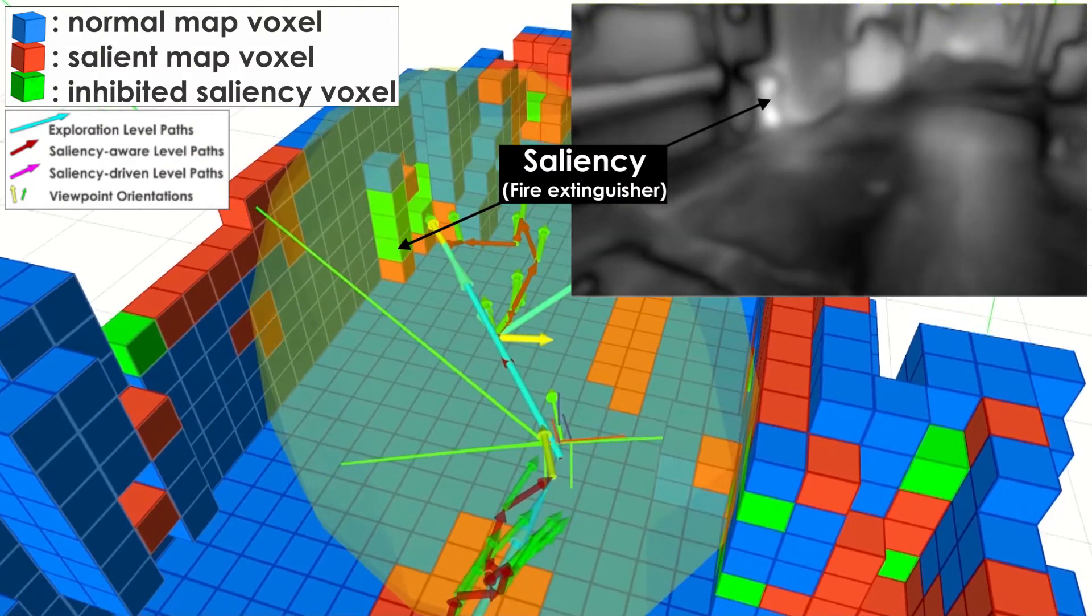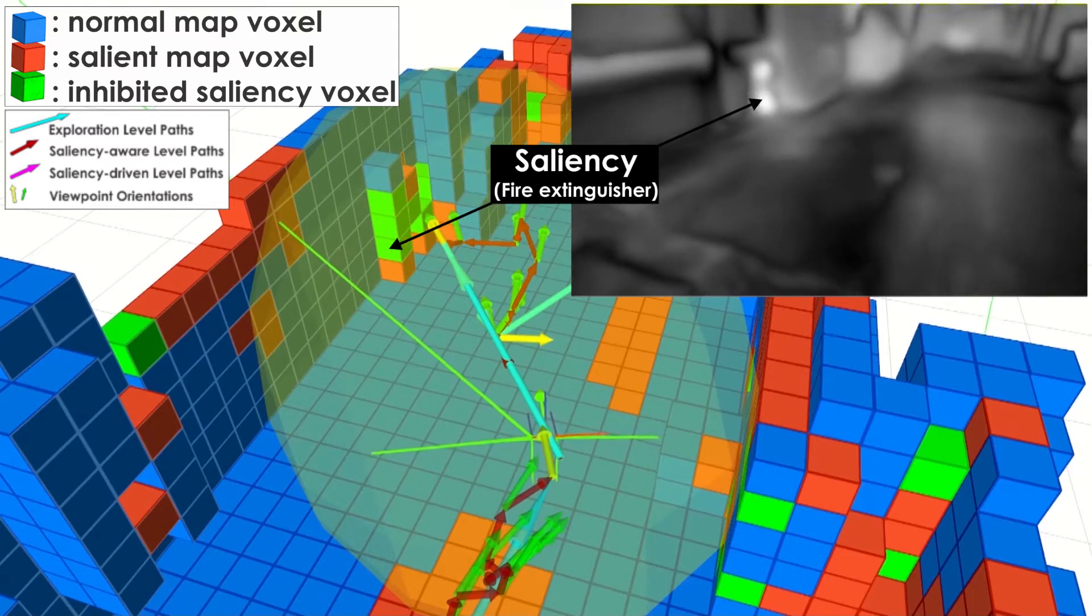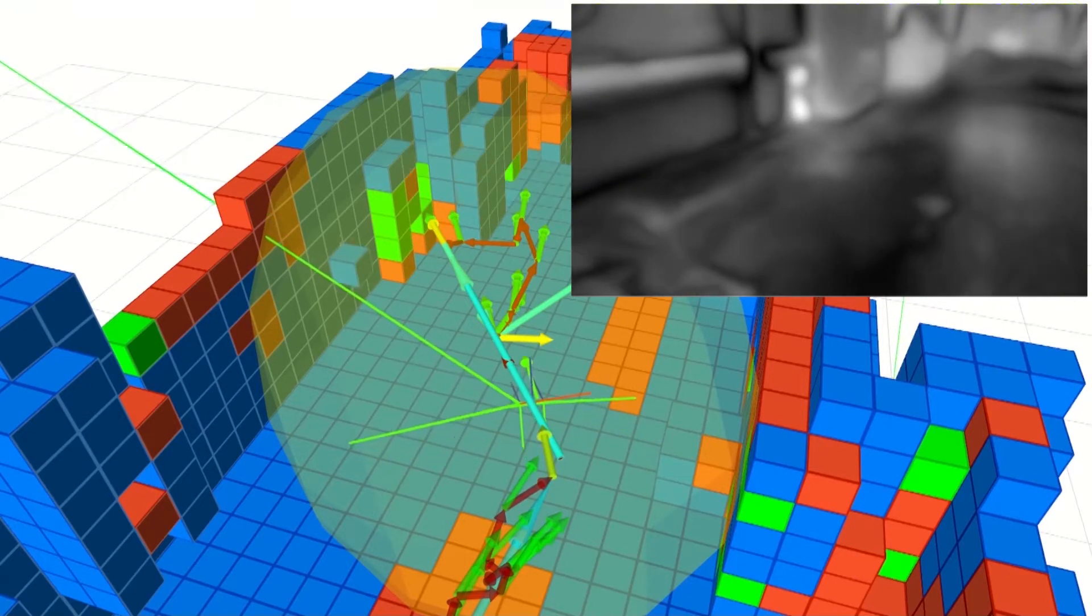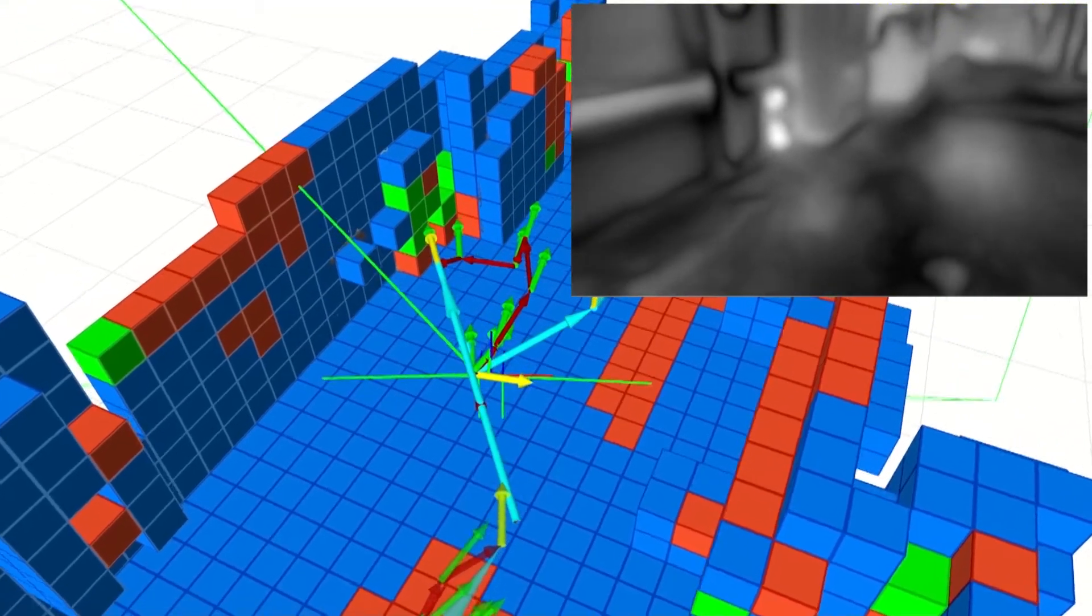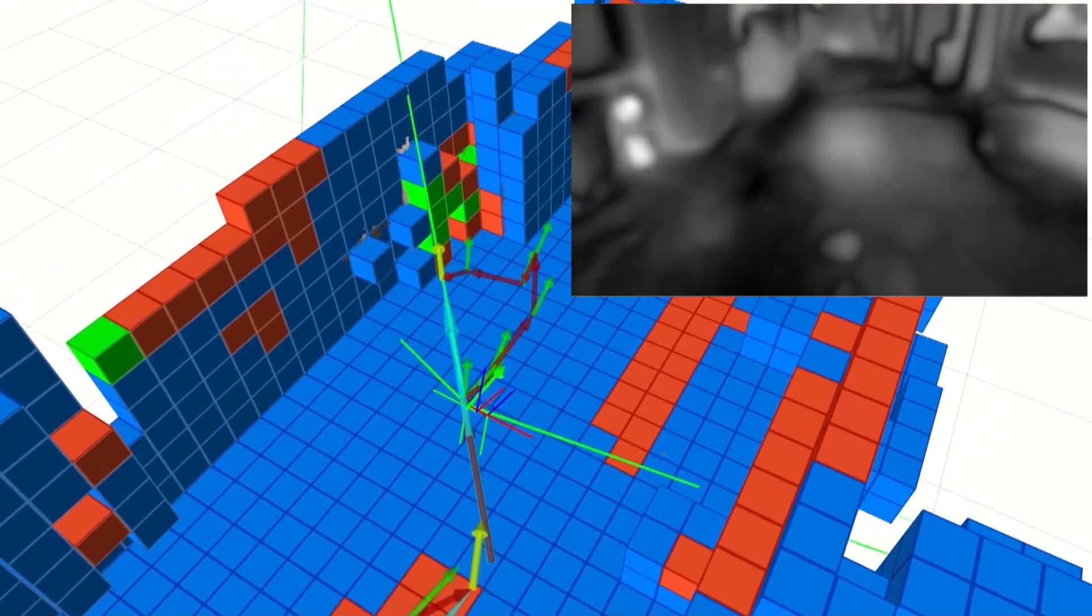The presented results refer to the exploration of two environments with different salient objects. Namely, a room with paintings and a mannequin, as well as a machine shop with warning signs and fire extinguishers.